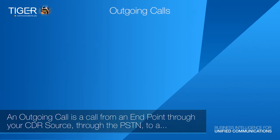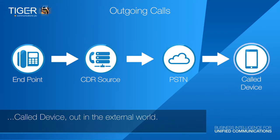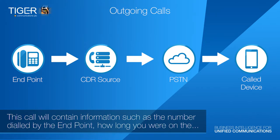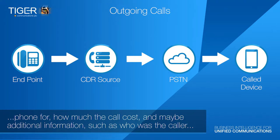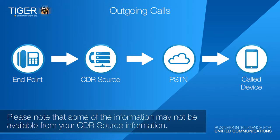An outgoing call is a call from an endpoint through your CDR source, through the PSTN, to a device out in the external world. This call will contain information such as the number dialed by the endpoint, how long you are on the phone for, how much the call cost, and additional information such as who the caller was transferred to or where the call was transferred from. Please note that some of this information may not be available from your CDR source.